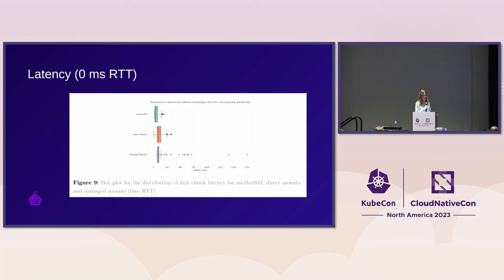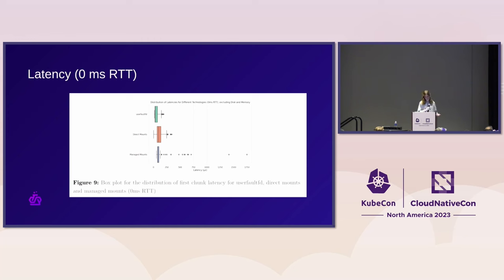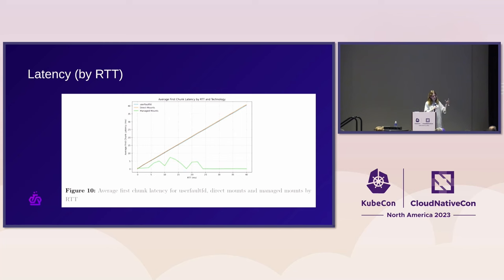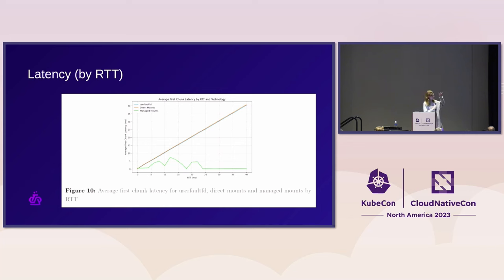You might wonder: this uses NBD — a network block device — it must be slow. It turns out that's actually not the case at all. We compared this head-on to userfaultfd — both implemented in Go, so it's a fair comparison. There's some more spread as you'd expect, running at sub-millisecond RTT, but it's fairly comparable in terms of latency. Where it really gets interesting is over higher RTT, because we are able to do background push and pull that we couldn't do with userfaultfd since we couldn't track writes to the memory regions.